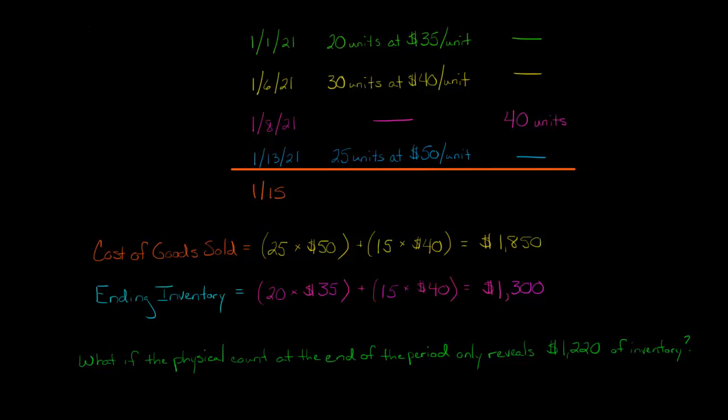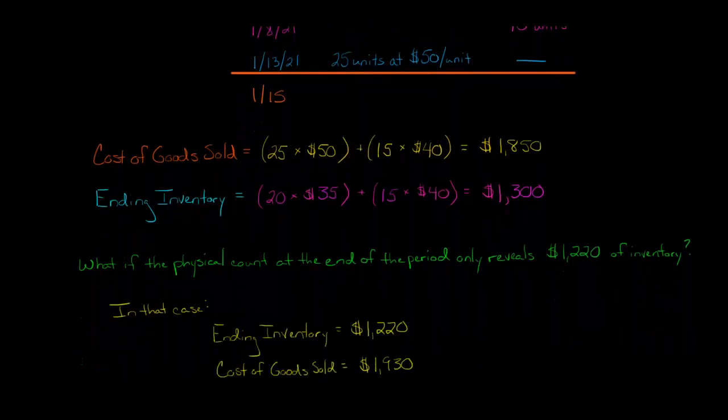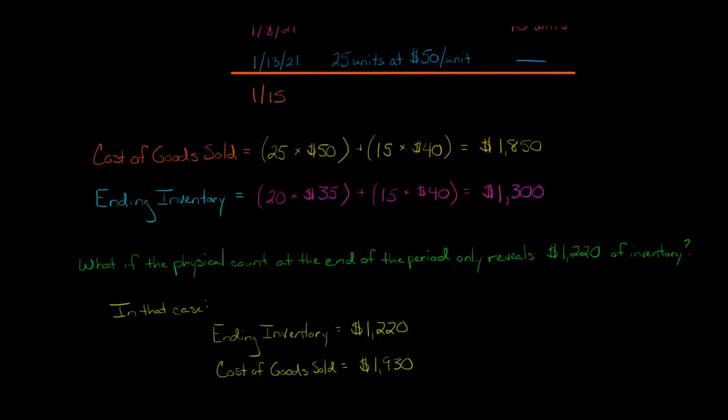Now, as a caveat, let's say that we've done all this and then the company does a physical count. They actually go and count the inventory at the end of the period. And they say, we've done a count and we only have $1,220 of inventory. So our ending inventory is overstated, clearly, because maybe there was some theft of some inventory or something was lost or damaged. Our inventory is overstated. So if we do a physical count and we see that, then we need to make an adjustment.